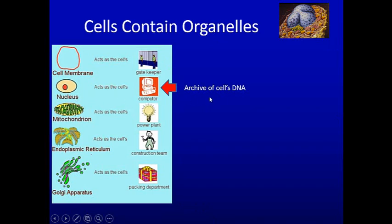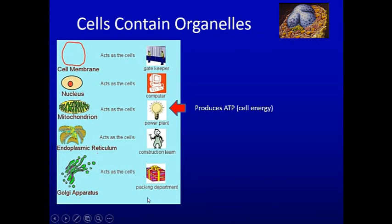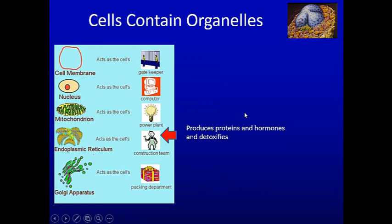The nucleus, like a computer of a cell, is the archive of the cell — it has all the information. One cell has all the information to perform all functions of all cells in the body; it just selectively expresses it. Here we see the nucleus, nucleolus, and mitochondria. Mitochondria produce ATP — they are your energy production. We see a mitochondrion with a double membrane structure and cristae associated with making energy.